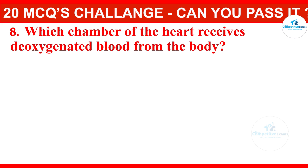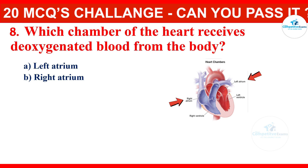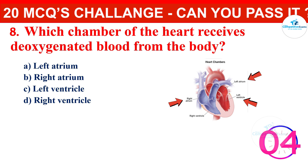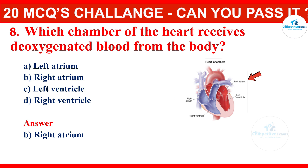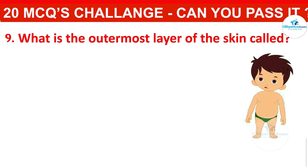Which chamber of the heart receives deoxygenated blood from the body? Your options are: left atrium, right atrium, left ventricle, or right ventricle. The correct answer is right atrium. The right atrium receives deoxygenated blood from the body and pumps it into the right ventricle for pulmonary circulation.